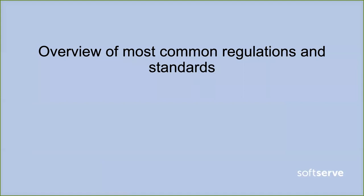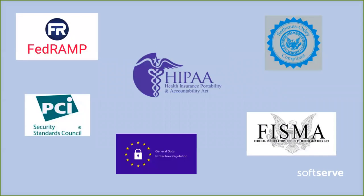The most common regulations you can encounter include FedRAMP, Sarbanes-Oxley Act, HIPAA, PCI DSS, FISMA, and GDPR. Most of them — including PCI DSS, HIPAA, FISMA, and GDPR — deal with data privacy and data security. Sarbanes-Oxley deals mostly with data integrity and transparency. FedRAMP is more of a risk management program, but it's also a standard that can sometimes be required.